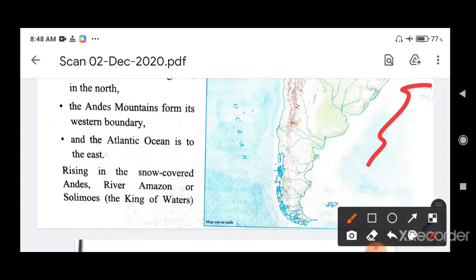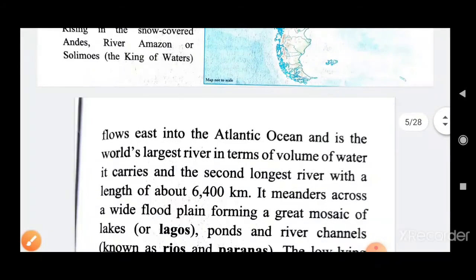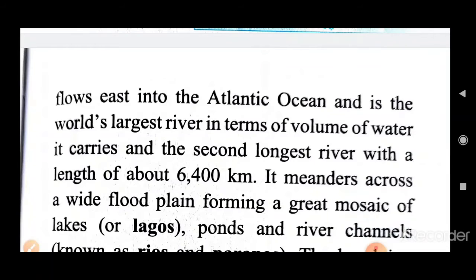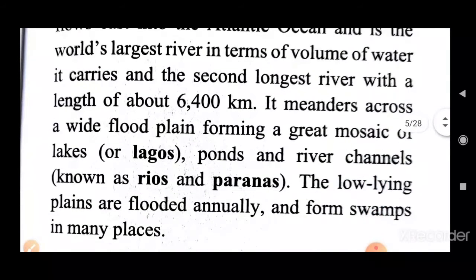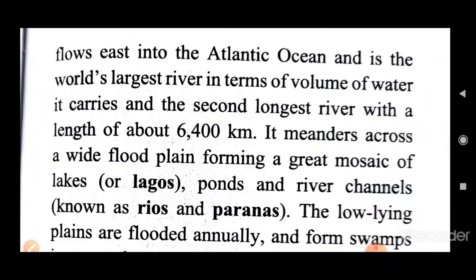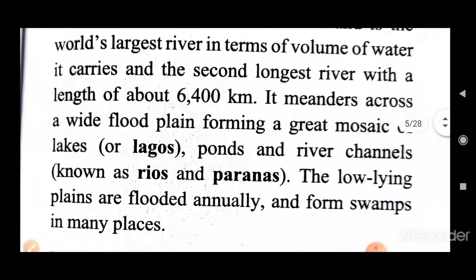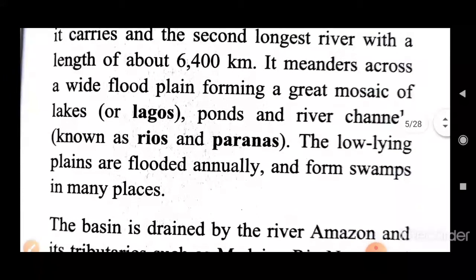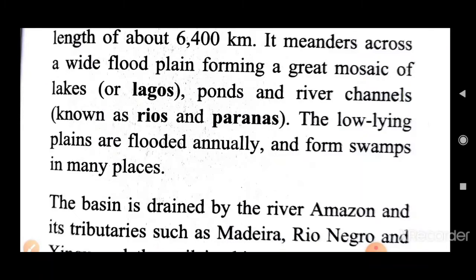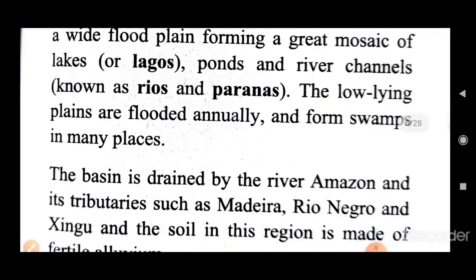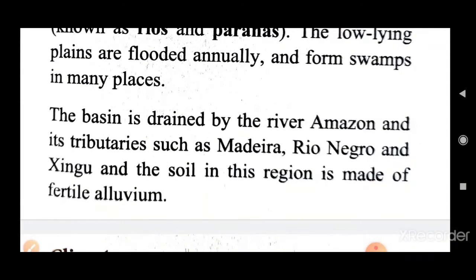Rising in the snow-covered Andes, the river Amazon — also called Solimões, the king of waters — flows east into the Atlantic Ocean. It is the world's largest river in terms of volume of water it carries, and the second longest river with a length of about 6,400 kilometers. It meanders across a wide flood plain, forming a great mosaic of lakes, ponds, and river channels.